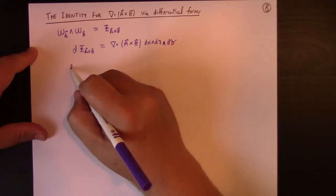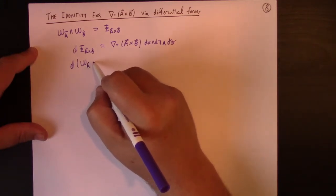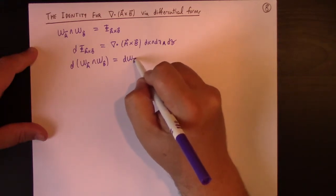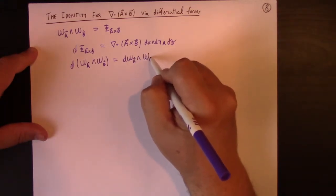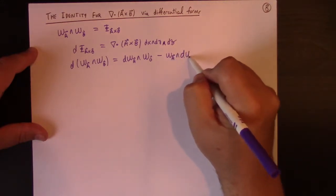But on the other hand, I know I can take the exterior derivative of the wedge product of omega A and omega B, and by the graded Leibniz rule, I get d omega A wedge omega B minus omega A wedge d omega B.